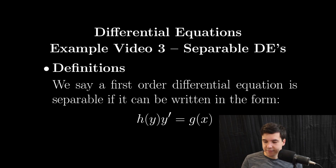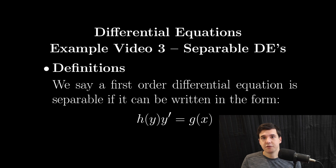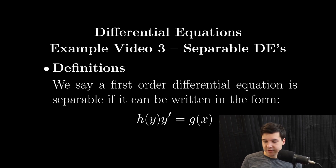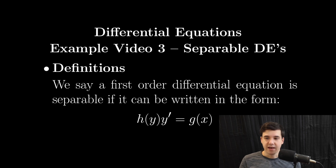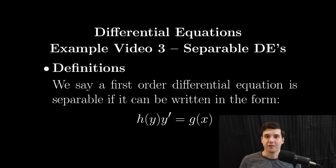For today's video we only have one definition, and that's just the definition of separability, which we're going to use for all of these problems. We will say that a first order differential equation is separable if it can be written in the form h(y) times y prime is equal to g(x). If you can separate the variables, the equation is separable. With that defined, let's go ahead and get into our first example.